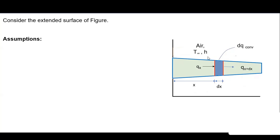A small strip of length dx is taken at distance x along the fin. Heat qx enters the element by conduction, heat qx+dx leaves by conduction, and heat dq_convection is lost by convection from the strip surface. Applying energy balance: energy in equals energy out, giving qx = qx+dx + dq_convection. This is our energy balance equation 3.2.